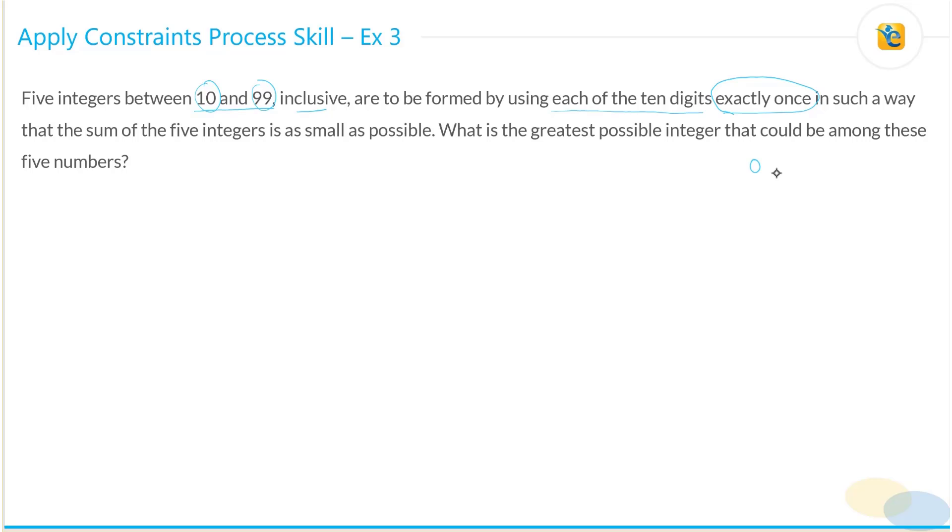What are all our digits? Zero all the way to 9, in such a way that the sum of the five integers is as small as possible.